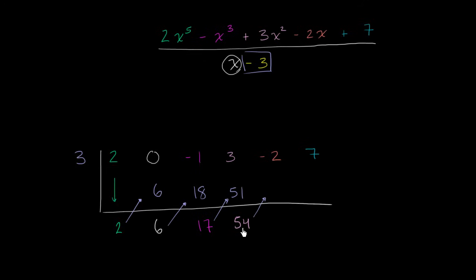So this is going to be 162. Negative 2 plus 162 is 160. And then finally, 160 times 3 is going to be 480. And you add 480 to 7, you get 487.